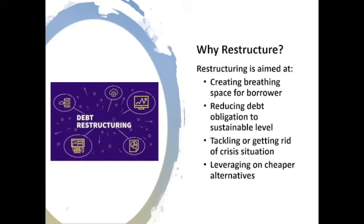So why do we restructure? The main aim of restructuring, number one, is to create a breathing space for the borrower. The borrower will be able to spread out the repayments and reduce the obligation within the short run. There is also reducing debt obligation to a sustainable level. If I take a loan and realize I cannot meet the monthly amortized amount, but I know I can raise money over a longer period, I can sit down with the bank and discuss adjusting it so that month to month, I reduce the obligation on me.